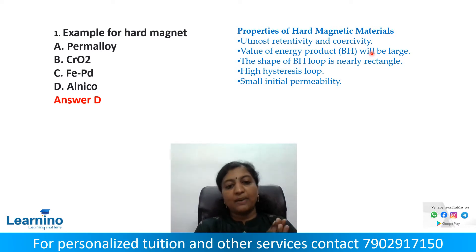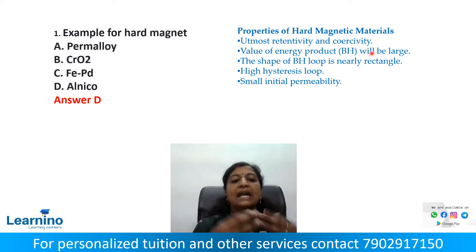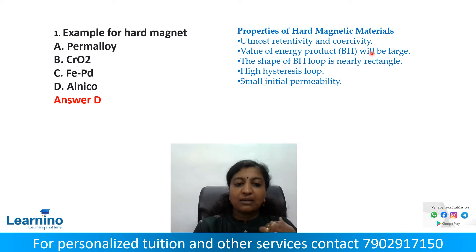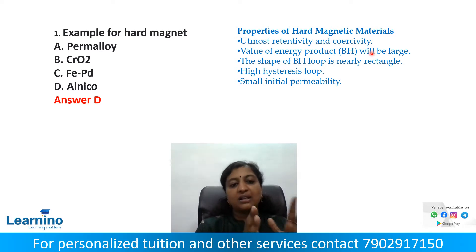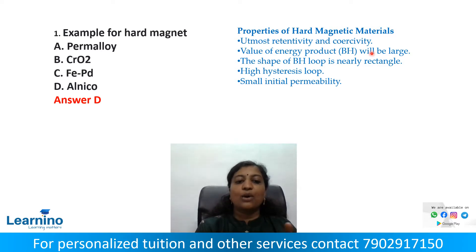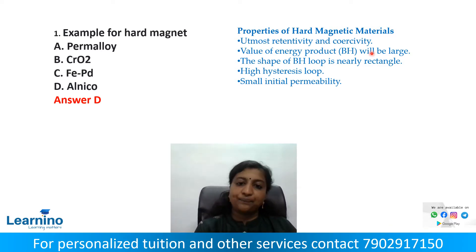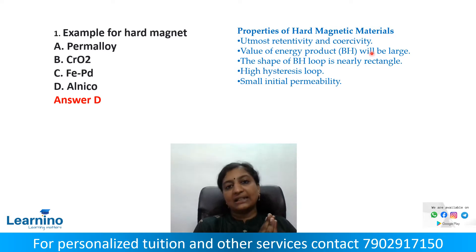For additional information, the properties of Hard Magnetic Materials — these are the properties of charged magnetic materials. From the options, the correct answer for an example of a Hard Magnet is Alnico.